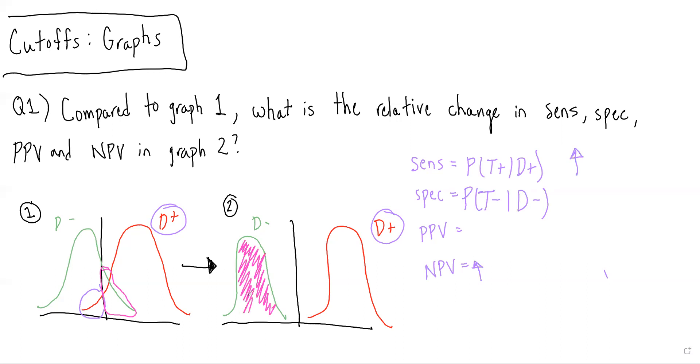And therefore, the probability of having a negative test given you do not have the disease is higher in graph two, because more of that disease-negative curve lies to the left of the cut-off. Therefore, specificity also will go up. And we know specificity tracks with PPV, and therefore PPV should also go up.